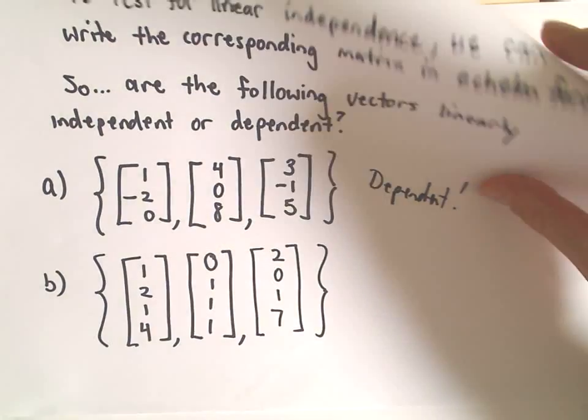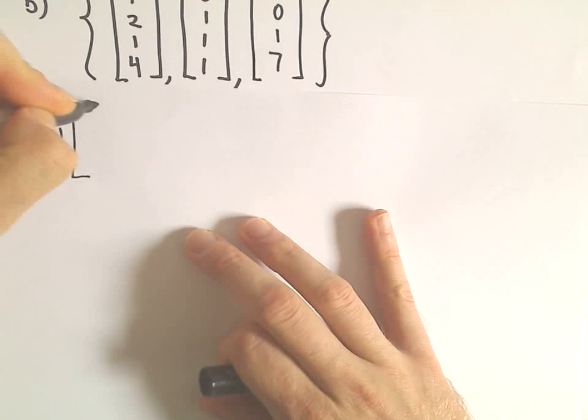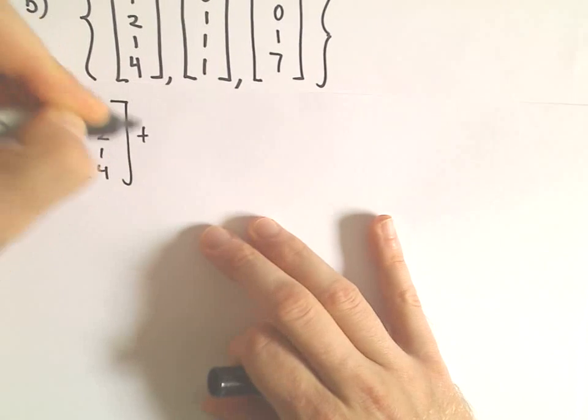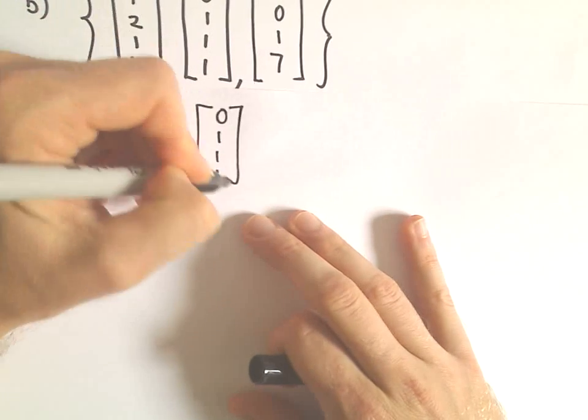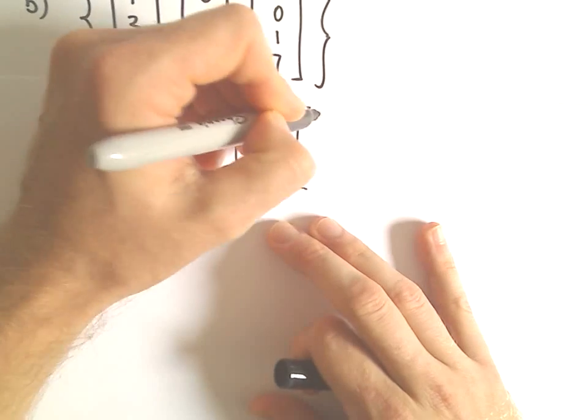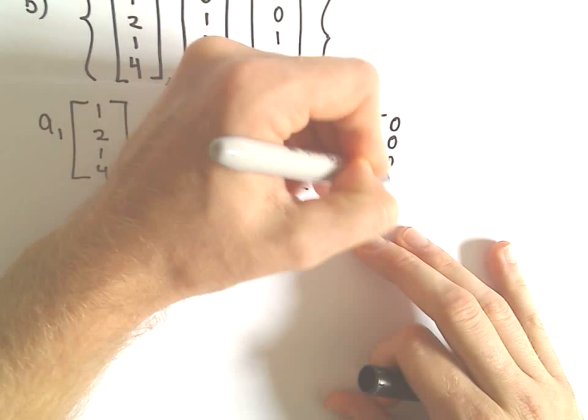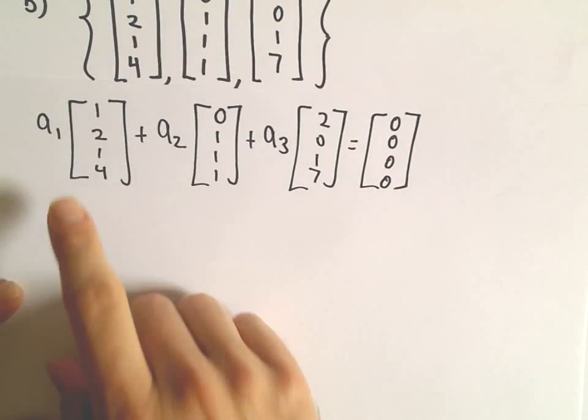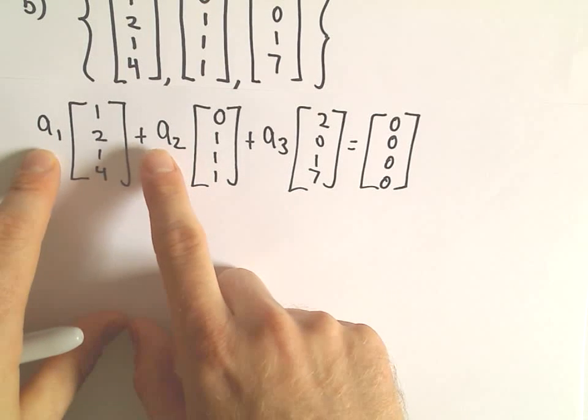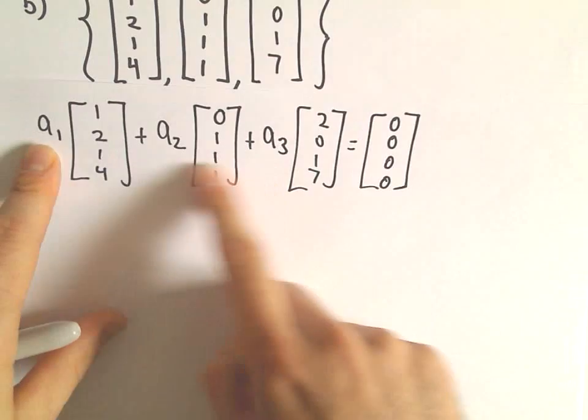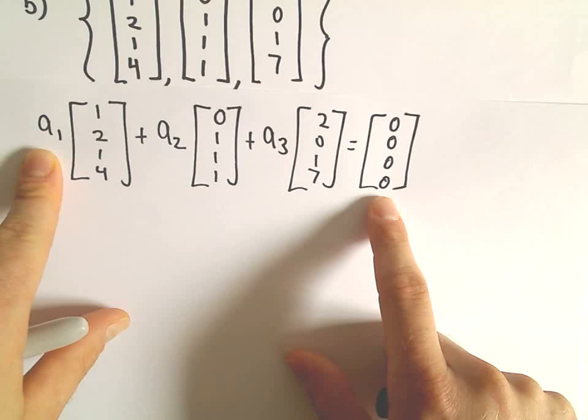Again, we're thinking about this system of equations. Normally I would not even write this step out, but just to emphasize, we're thinking about this equation where we multiply each vector by some real number scalars. We're trying to determine the solutions to this equation. Notice they always have a solution if we make all of the scalars equal to zero. We know that we always have that solution, the trivial solution.